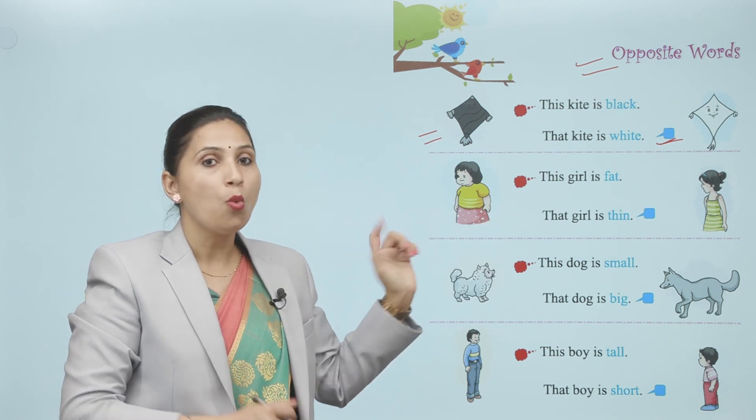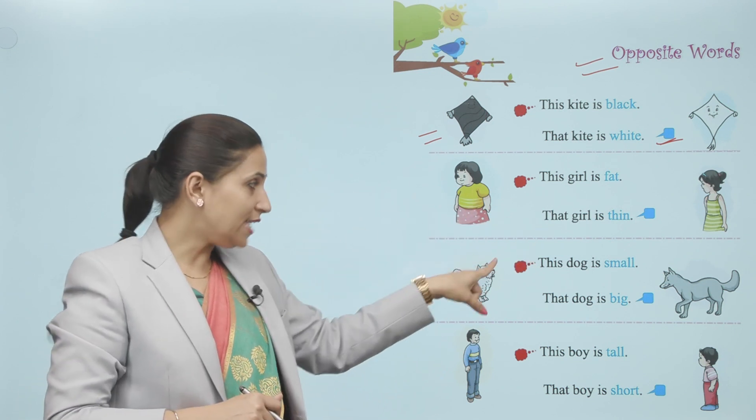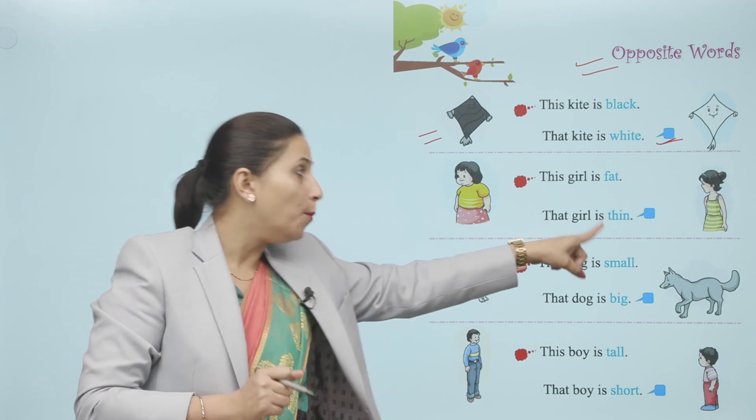This girl is fat and that girl is thin. This dog is small. That dog is big.